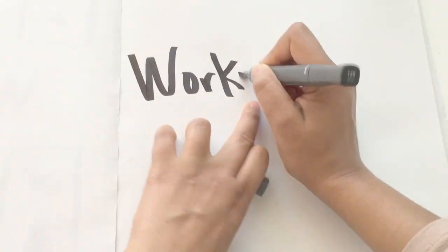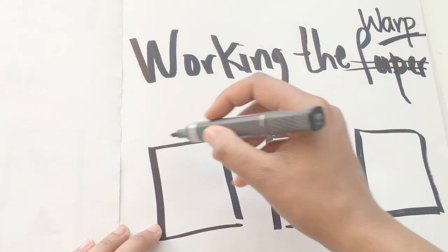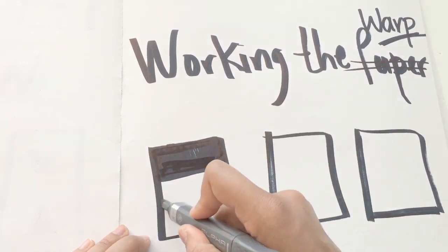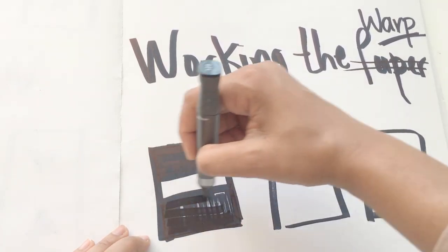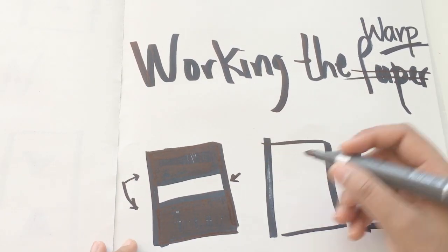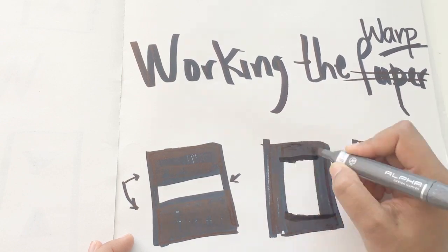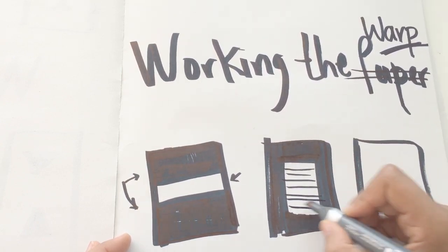There's an expression that we tend to use when drawing and it's working the page or working on the paper. But in this case, we'll be looking at working the warp. When working the warp, you want to be looking about how you will disperse the weight or design that you're making.